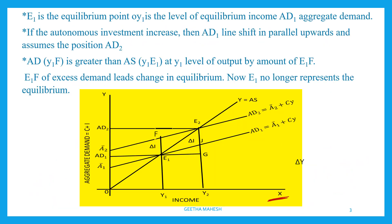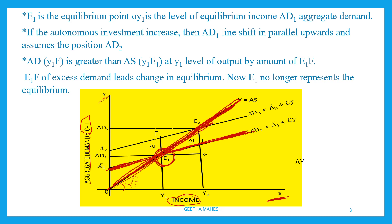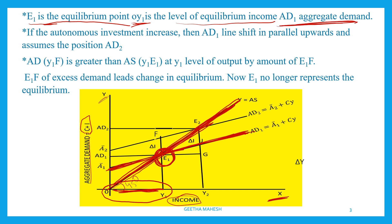Here is the diagram. The Y-axis represents aggregate demand. The two components are consumption and investment. The 45-degree line is the aggregate supply line. The aggregate demand is the AD line. Where the AD line intersects the 45-degree AS line is equilibrium point E1. The income level OY1 corresponds to equilibrium E1, where aggregate supply equals aggregate demand.